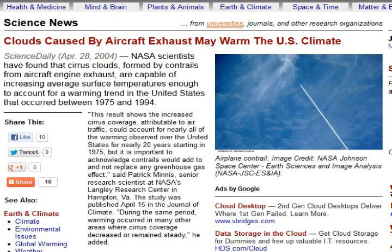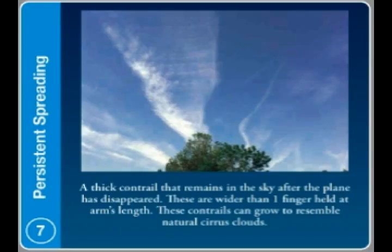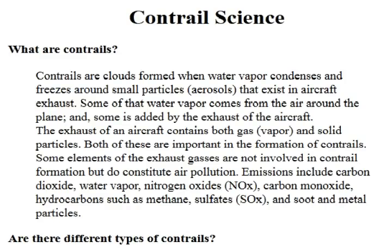Now if that's not a direct connection to climate change and global warming, we want to know under what conditions and how often we can expect to see different manifestations of persistent contrails, whether it's the non-spreading or the spreading type.